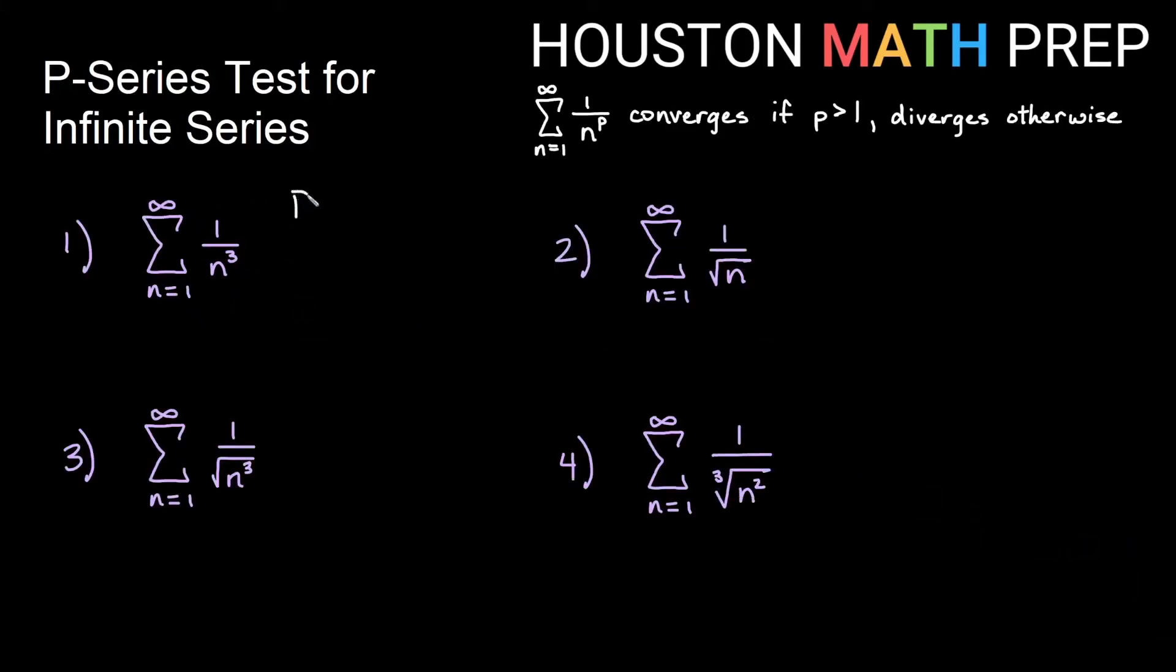If we look at some examples, this is a p-series where p is 3. As long as p is greater than 1, the series will converge. So this converges by the p-series test. Wasn't that easy? Because 3 is greater than 1.